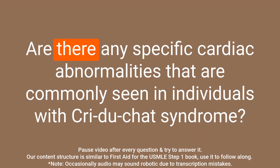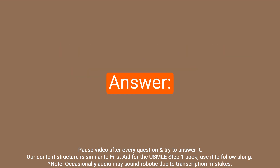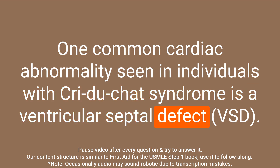Question: Are there any specific cardiac abnormalities commonly seen in individuals with Cri-du-chat syndrome? Answer: One common cardiac abnormality seen in individuals with Cri-du-chat syndrome is a ventricular septal defect.